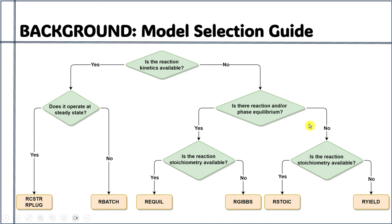In the case of non-equilibrium, you have the option of R-stoic and R-yield. R-stoic is used when the stoichiometric information is known; otherwise, you can select R-yield. The R-yield reactor is selected when you are unaware of reaction kinetics, no equilibrium is involved, and no information about reaction stoichiometry is available. It is the simplest reactor model, entirely based on your input information about the yield distribution of the products.